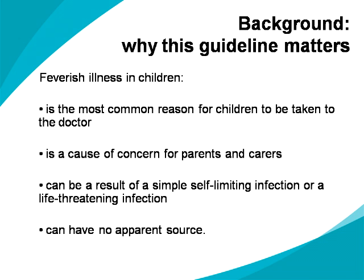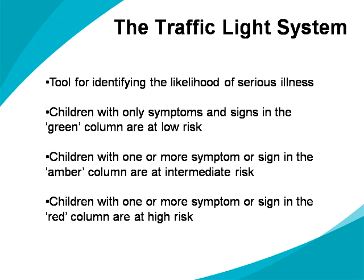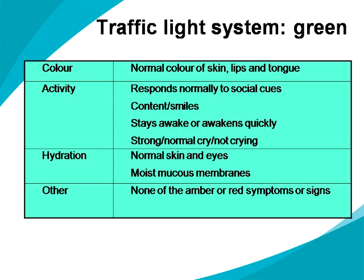In this context, what is the traffic light system? The traffic light system is a tool for identifying the likelihood of serious illness. Children with only symptoms and signs in the green column are at low risk. Children with one or more symptom or sign in the amber column are at intermediate risk. And children with one or more symptom or sign in the red column are at high risk.